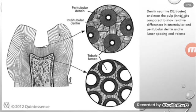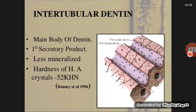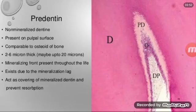Here you can also see the intertubular dentine. The main body of dentine is composed of intertubular dentine, and it is highly mineralized. You can see the intertubular dentine on the right side — this is the main body of dentine.